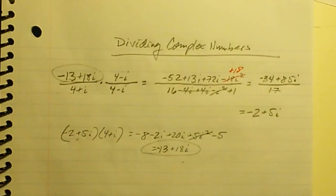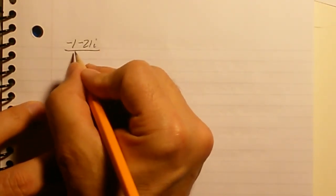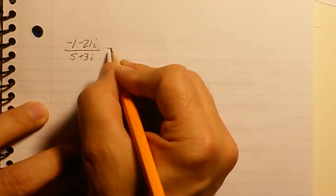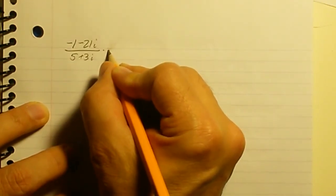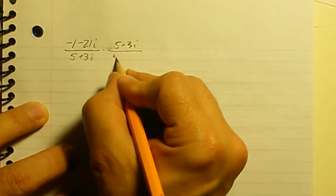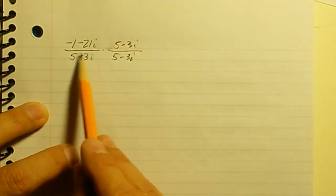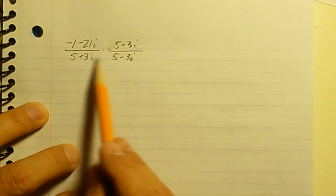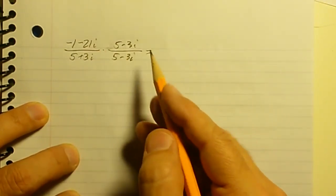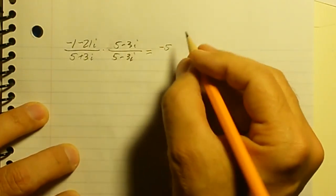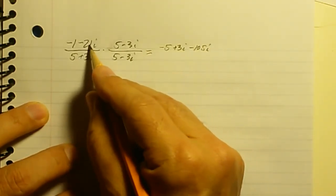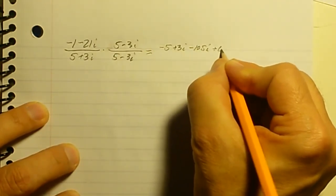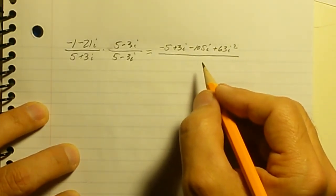Let's do one more problem: negative 1 minus 21i divided by 5 plus 3i. I want to multiply this fraction by 5 minus 3i over 5 minus 3i, because that's the complex conjugate of the denominator — the real part is the same, the imaginary part changes signs. In the numerator: negative 1 times 5 is negative 5, negative 1 times negative 3i is plus 3i, negative 21i times 5 is negative 105i, and negative 21i times negative 3i is plus 63i squared.